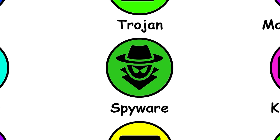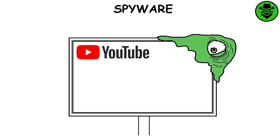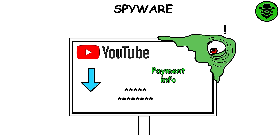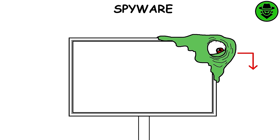Spyware. It's a type of malware that infects your computer and secretly gathers information about you, including the sites you visit, the things you download, your usernames and passwords, payment information, and the emails you send and receive. After this information is gathered, it's usually sent to a cybercriminal who may sell it or use it.